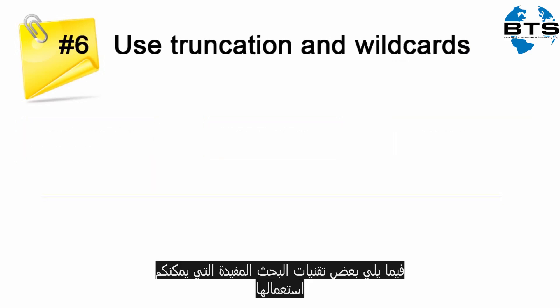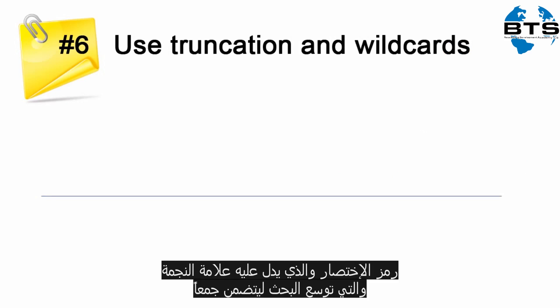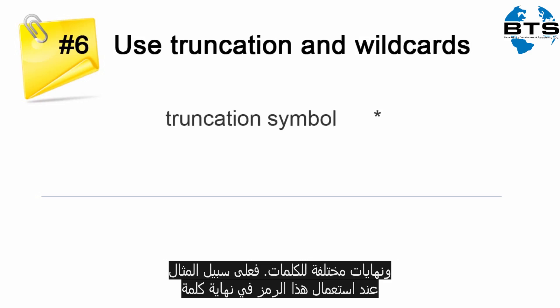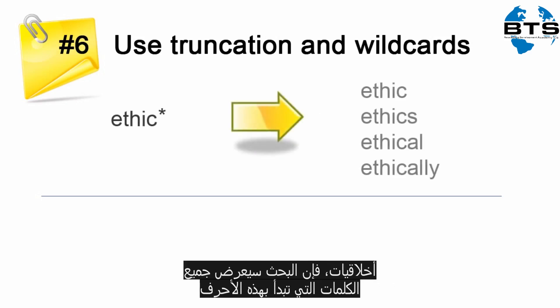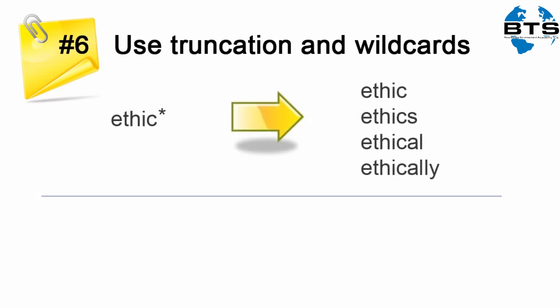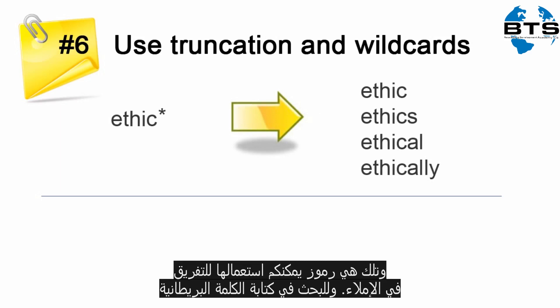Here are some useful search techniques. A truncation symbol, which is usually an asterisk, will broaden your search to include plurals and various word endings. For example, when you use a truncation symbol at the end of the word 'ethic', it will find all words that begin with those letters. There are also symbols you can use for differences in spelling.